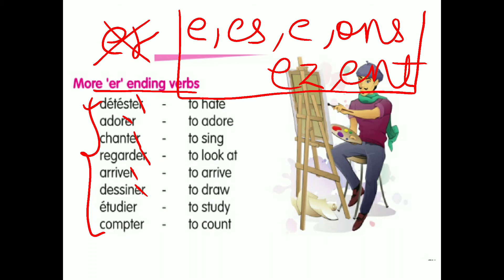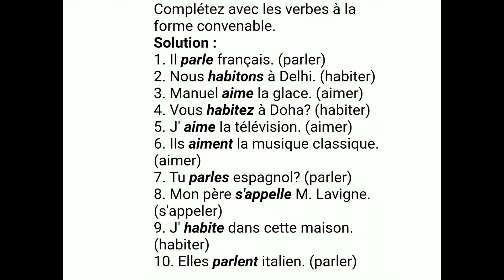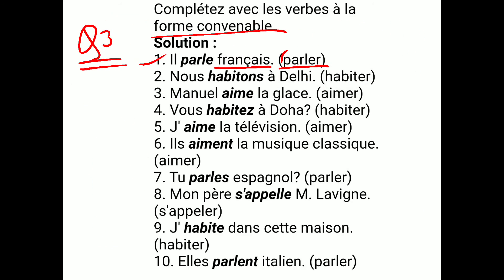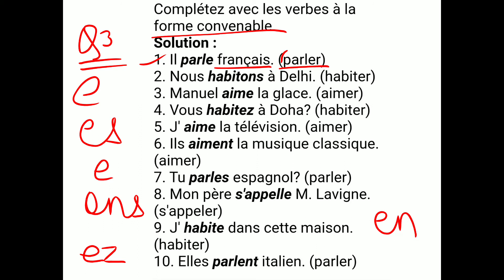Now we'll go to the exercise related to this topic. This is Exercise Question number 3 from your textbook — 'Complète avec le verbe à la forme convenable' — that means complete with the given verb in brackets in the correct form. The first one is: IL dash FRANCAIS, bracket PARLER.